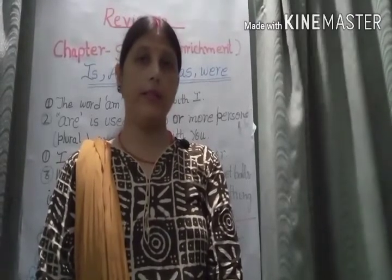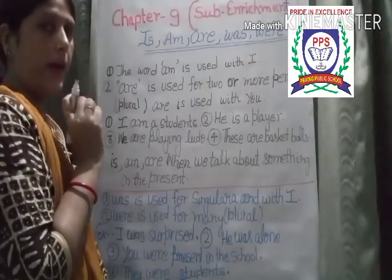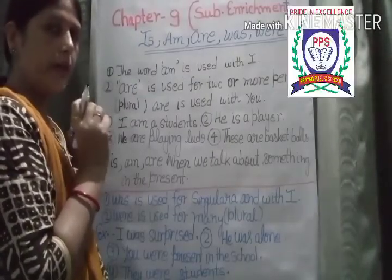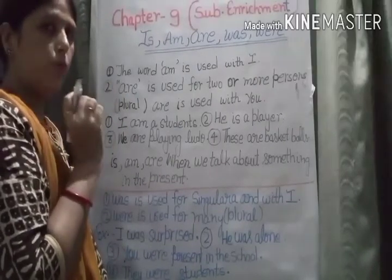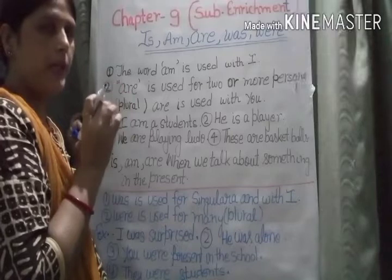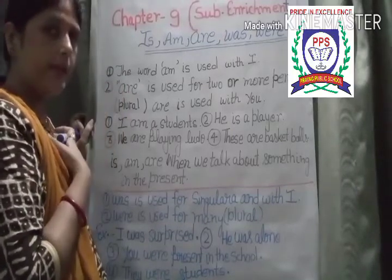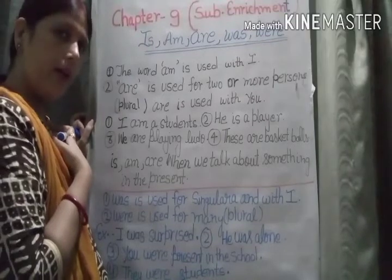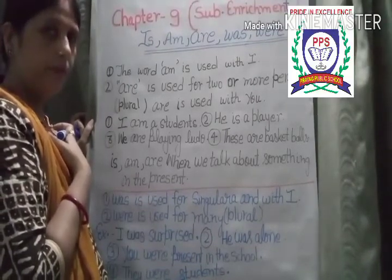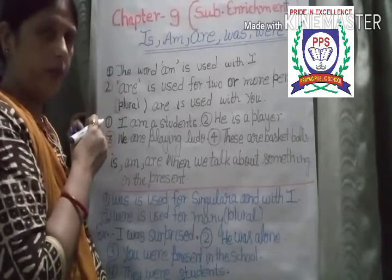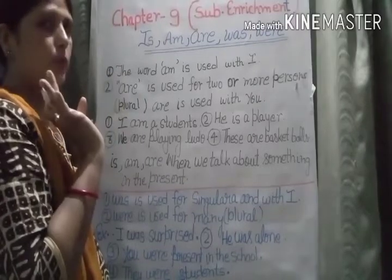So let's read now. 'I' jo subject hai, us ke sath hi 'am' use hota hai. Or kisi bhi word ke sath 'am' ka use nahi hota. Am means 'hoon'. Sirf I ke sath hi am ka use hota hai. I am a boy. I am a student. I am going to market.